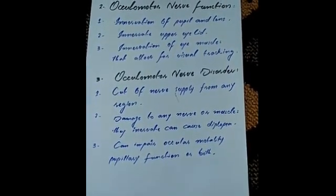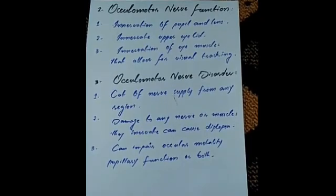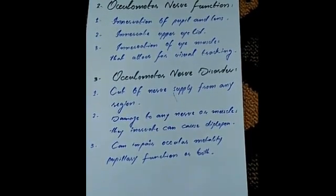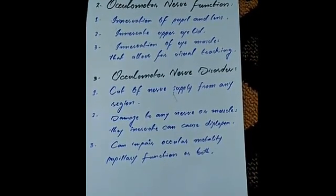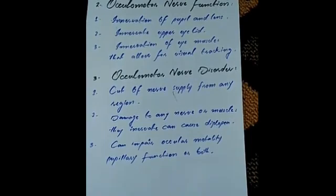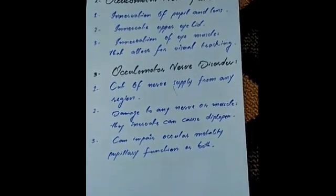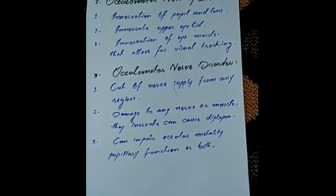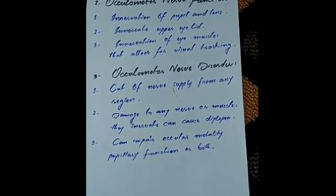Oculomotor nerve disorder occurs when the nerve supply is cut off from any region. Damage to any nerve or muscles that they innervate can cause diplopia.